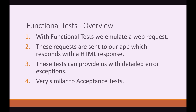So, functional tests. With functional tests we emulate a web request. These requests are sent to our app which responds with an HTML response, so we don't actually require a server. These tests can provide us with detailed error exceptions. It is very similar to acceptance tests because we can emulate user actions, but the key difference is that a functional test emulates a web request whereas an acceptance test uses a browser.